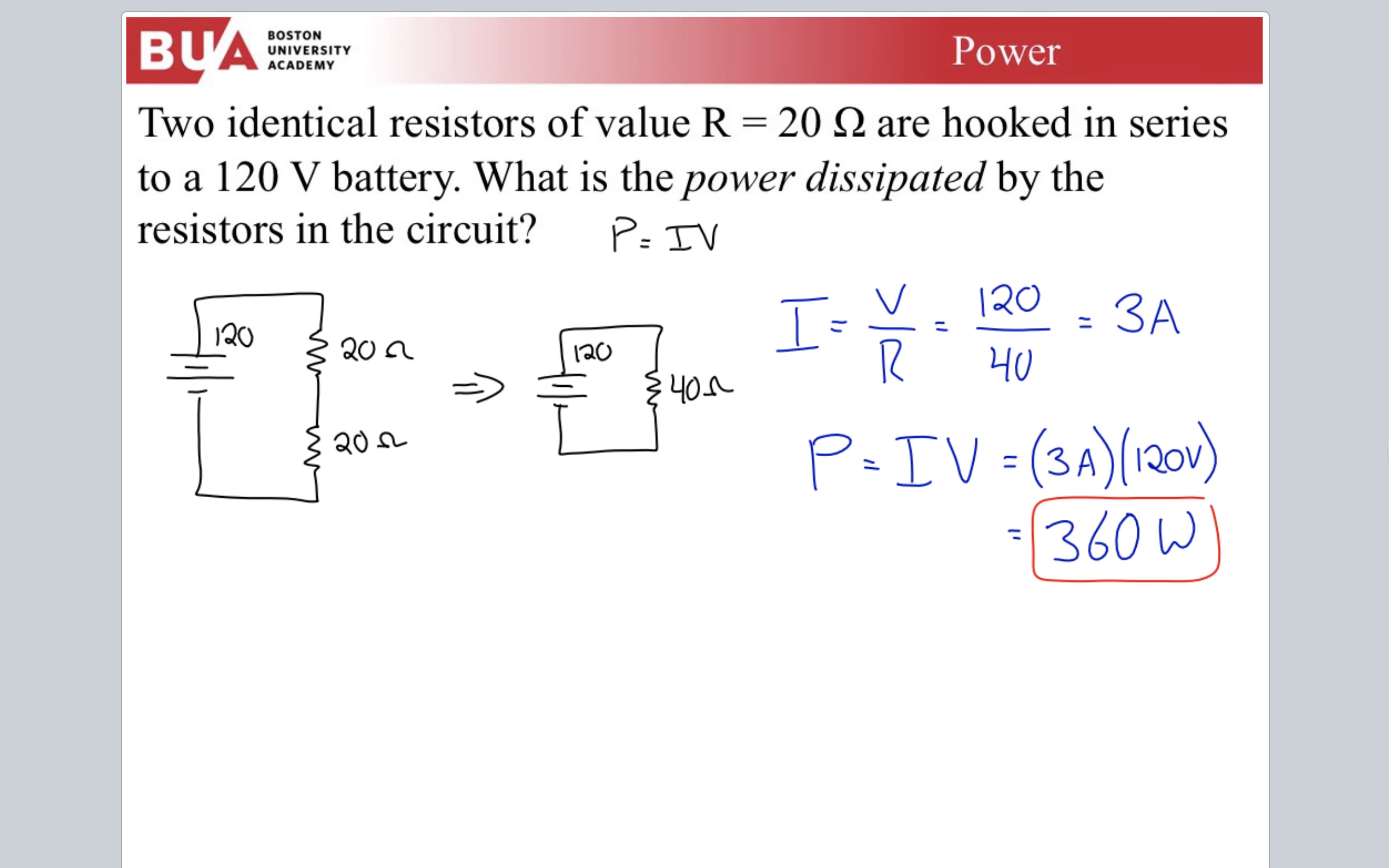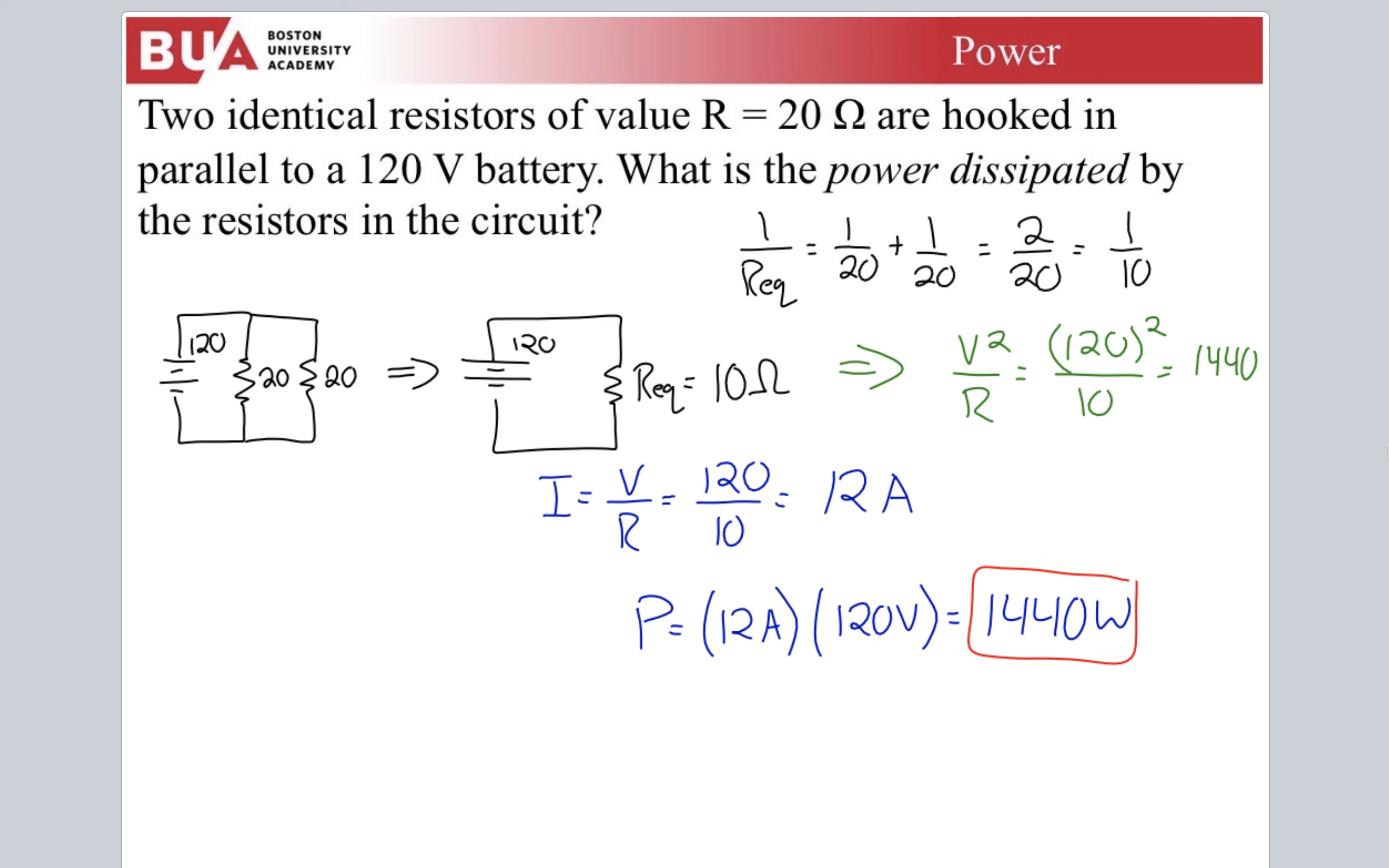Same thing here. V squared over R, 120 squared over 40. That would have given us 360. It doesn't matter how you do it. But it's interesting how much more power is dissipated in a parallel circuit. So if you want to drain a battery, hook some things up in parallel. It will just drain them much faster. Much more power dissipated this way. Homework is going to be working on stuff like this.